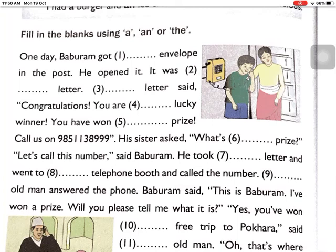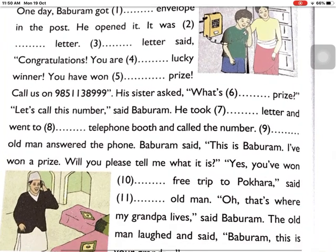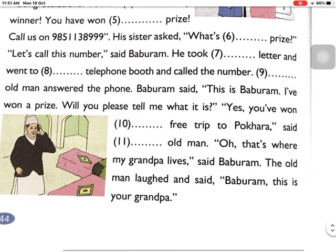And called the number. Number nine: '___ old man answered the phone.' Old man is introduced for the first time here, so: 'An old man answered the phone.' Bab Graham said, 'This is Bab Graham. I have won a prize. Will you please tell me what it is?' 'Yes, you have won a free trip to Pohara,' said the old man. 'That's where my grandpa lives!' said Bab Graham. The old man laughed and said, 'Bab Graham, this is your grandpa!'